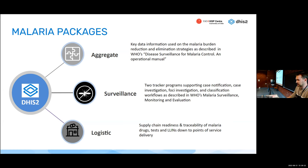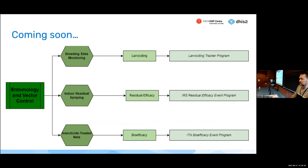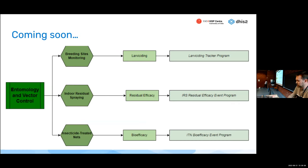There is also the logistic part — supply chain readiness and traceability of malaria drugs, tests, and long-lasting insecticide nets down to point of service delivery. Very soon, three different packages will come specifically on the vector control part: breeding sites monitoring as a tracker program, indoor residual spraying as an event, and insecticide treated nets as an event as well.